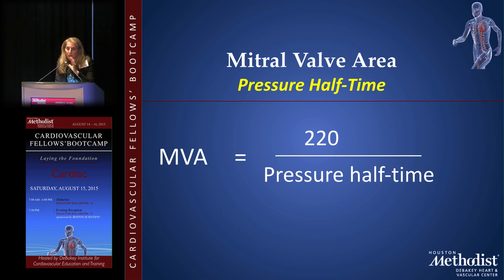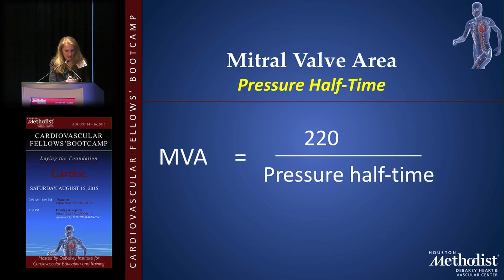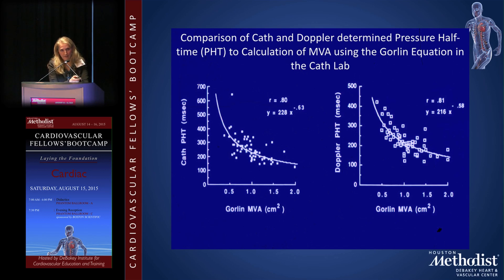Another Doppler approach is calculating the mitral valve area using pressure half-time — the time it takes for the gradient across the mitral valve to decay by half. The mitral valve area equals 220 divided by the pressure half-time. This method correlates well when compared to invasive measurement in the catheterization laboratory.